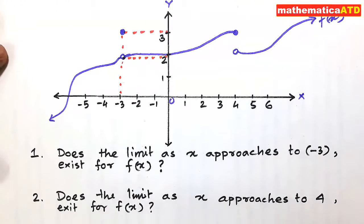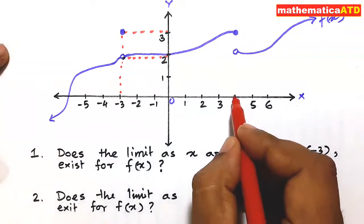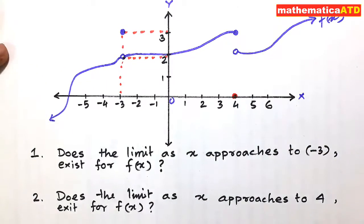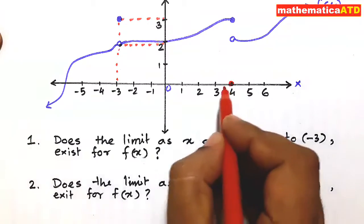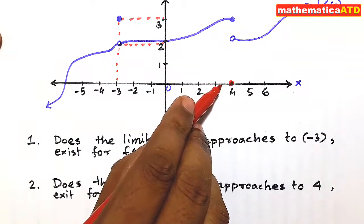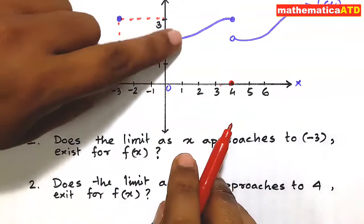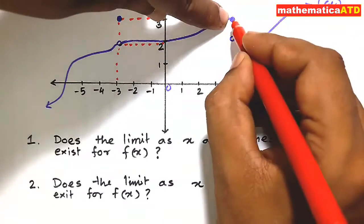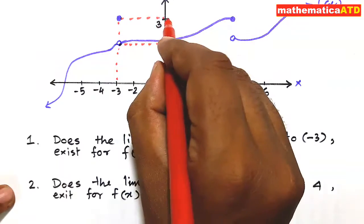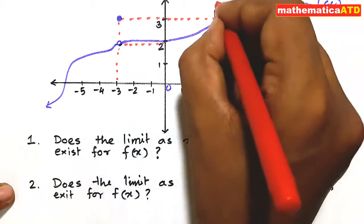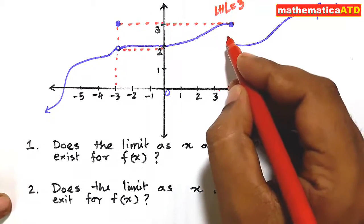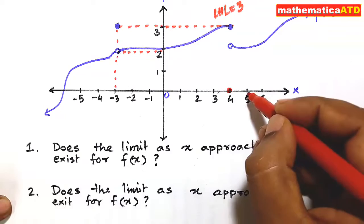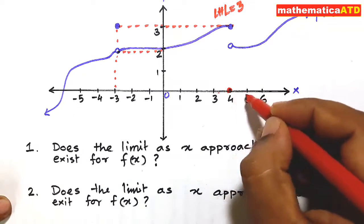Second question: does the limit as x approaches 4 exist for f(x)? At x = 4, when we proceed from the left side, we approach this ordinate value of 3 units on this curve. So the left hand limit (LHL) = 3 units.